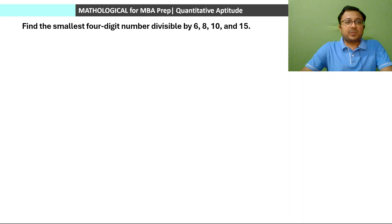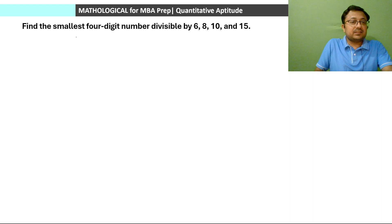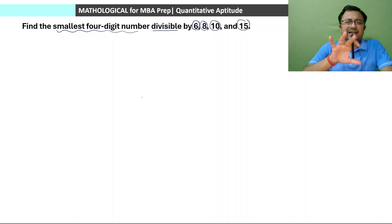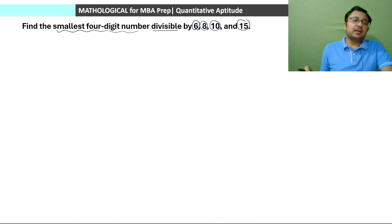The first question: find the smallest four-digit number divisible by 6, 8, 10 and 15. We need to find out the smallest four-digit number that is divisible by 6, 8, 10 and 15.